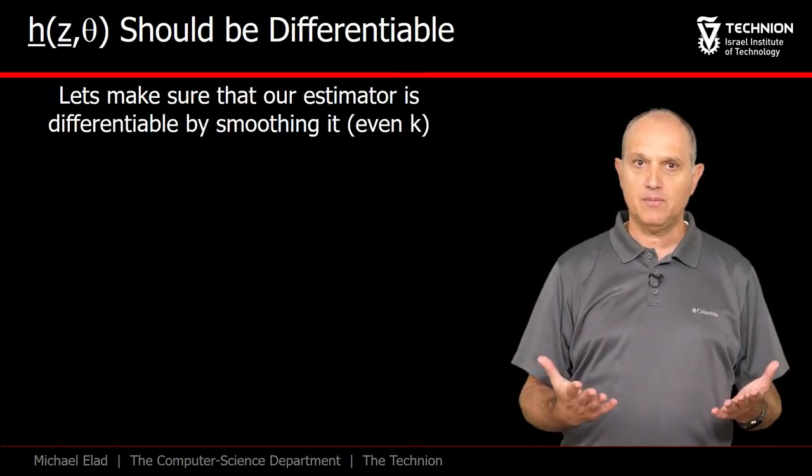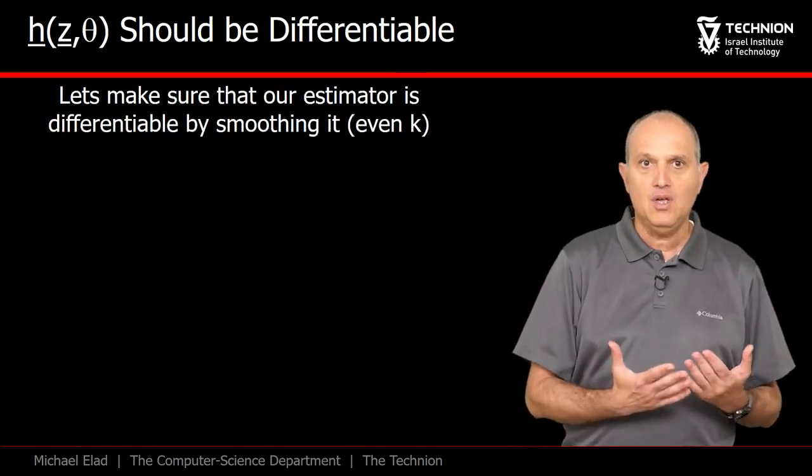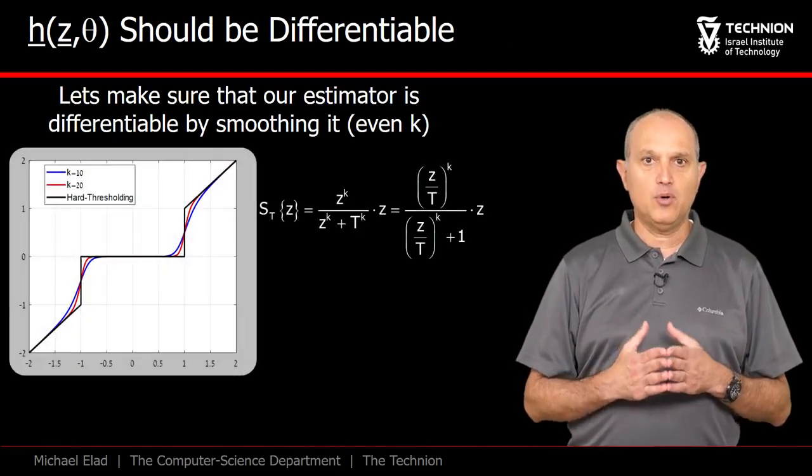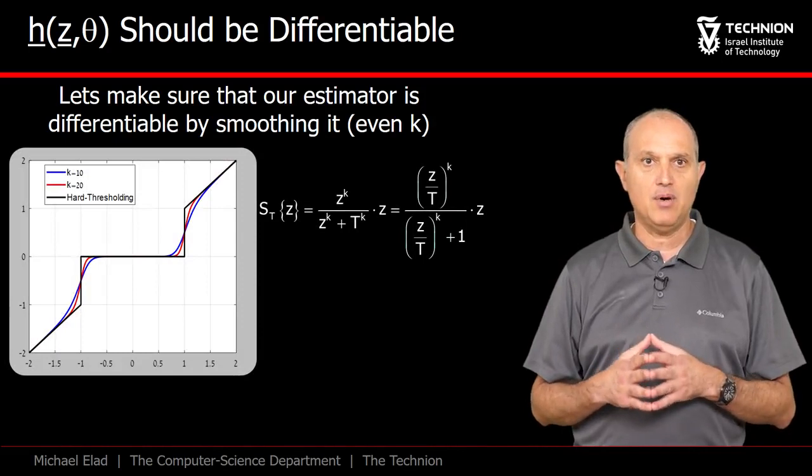The thresholding operator is not differentiable, and thus the first thing to do is to smooth it out somehow. Here is our proposed smooth curve, which uses an even k power.